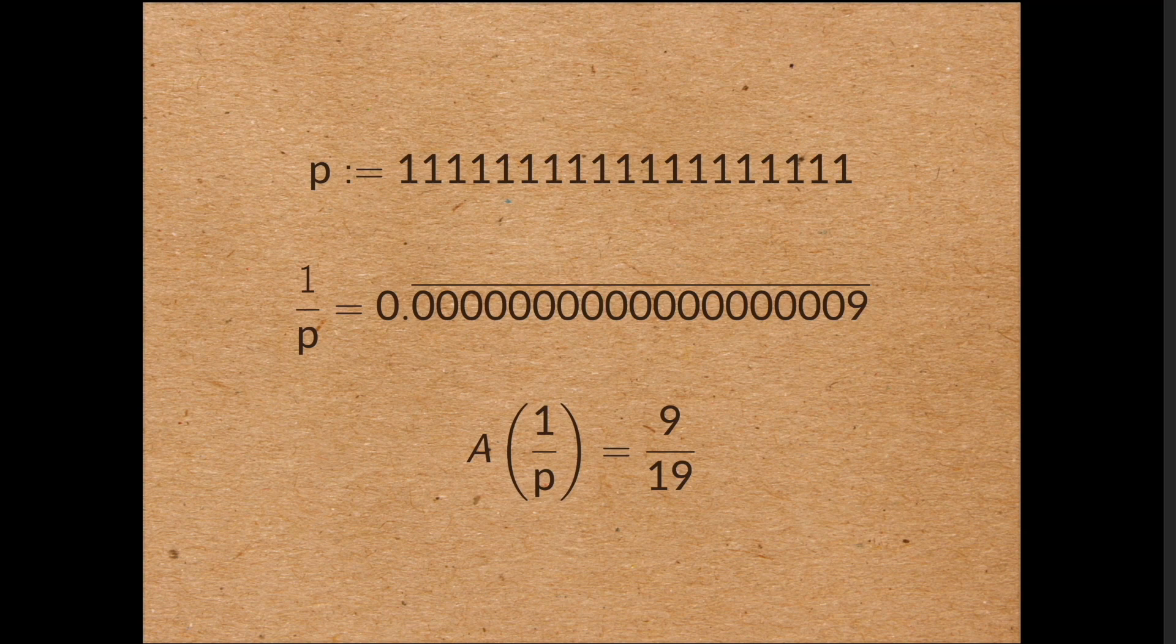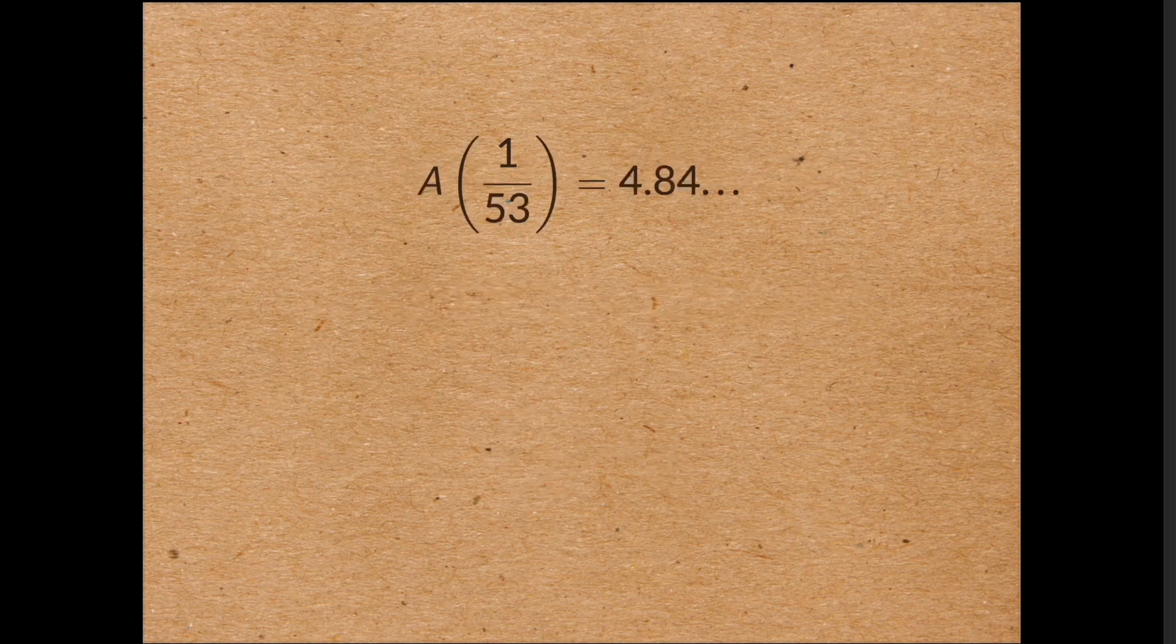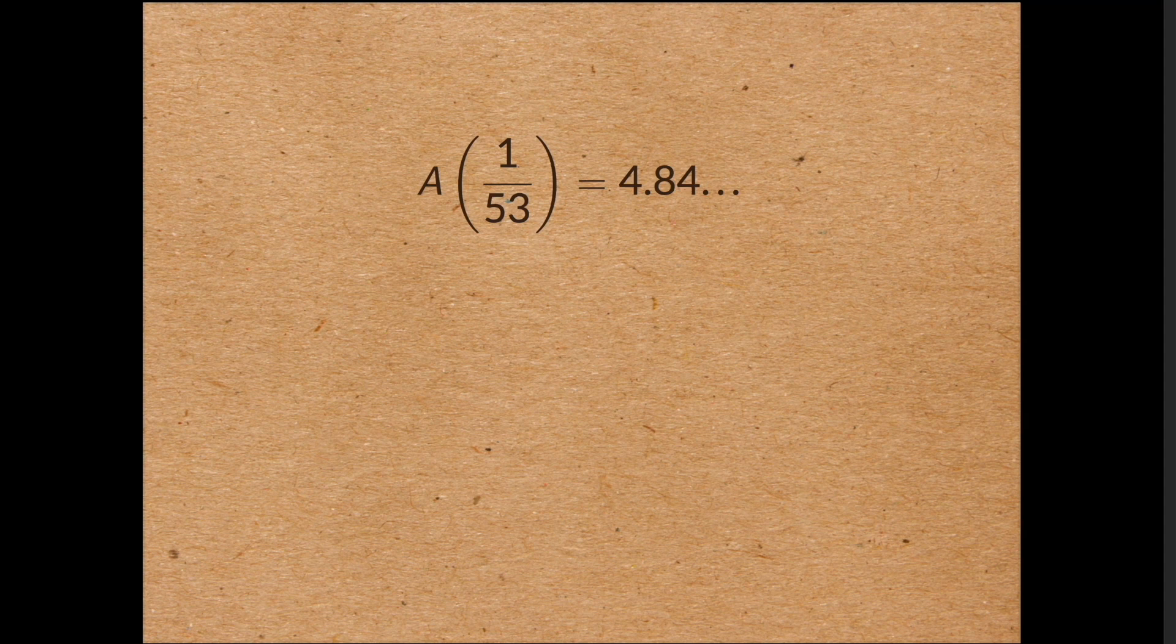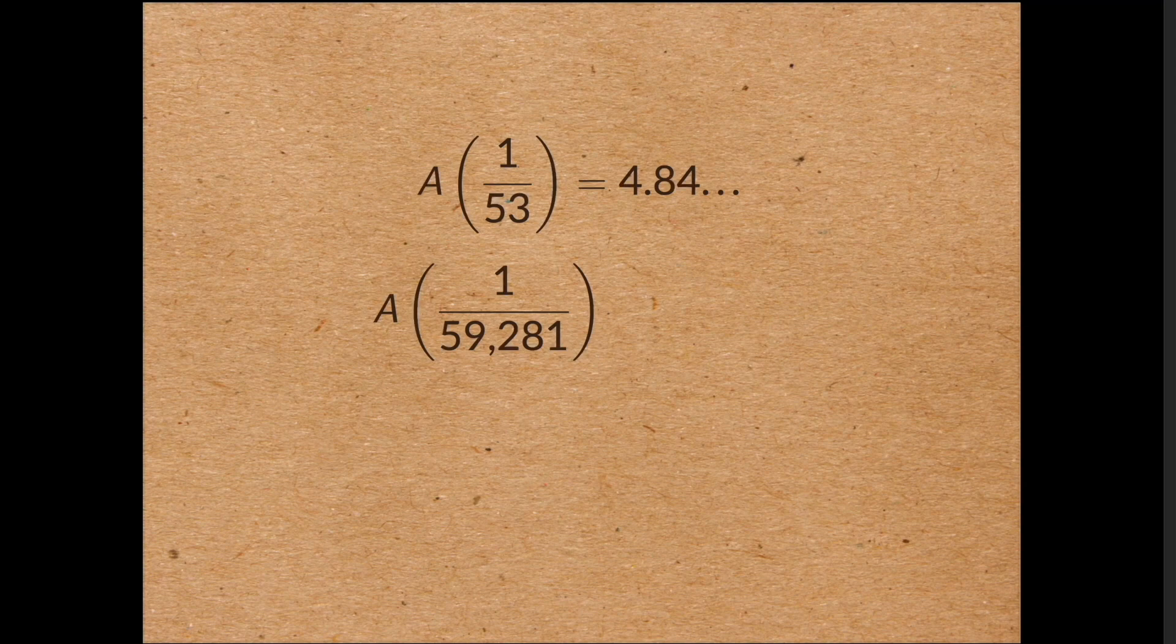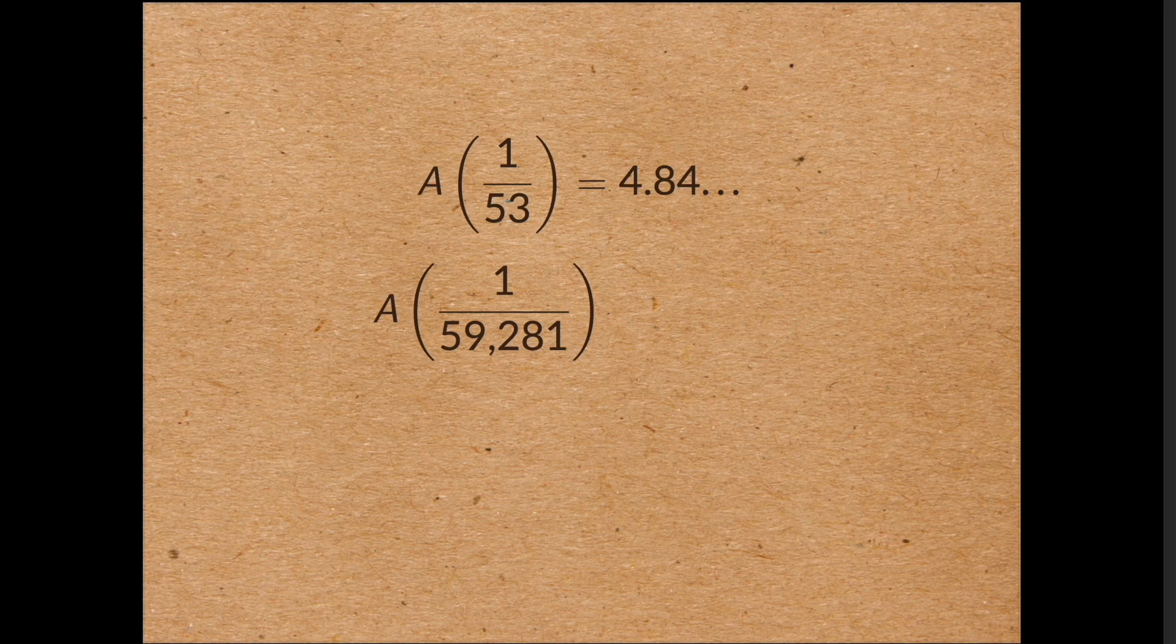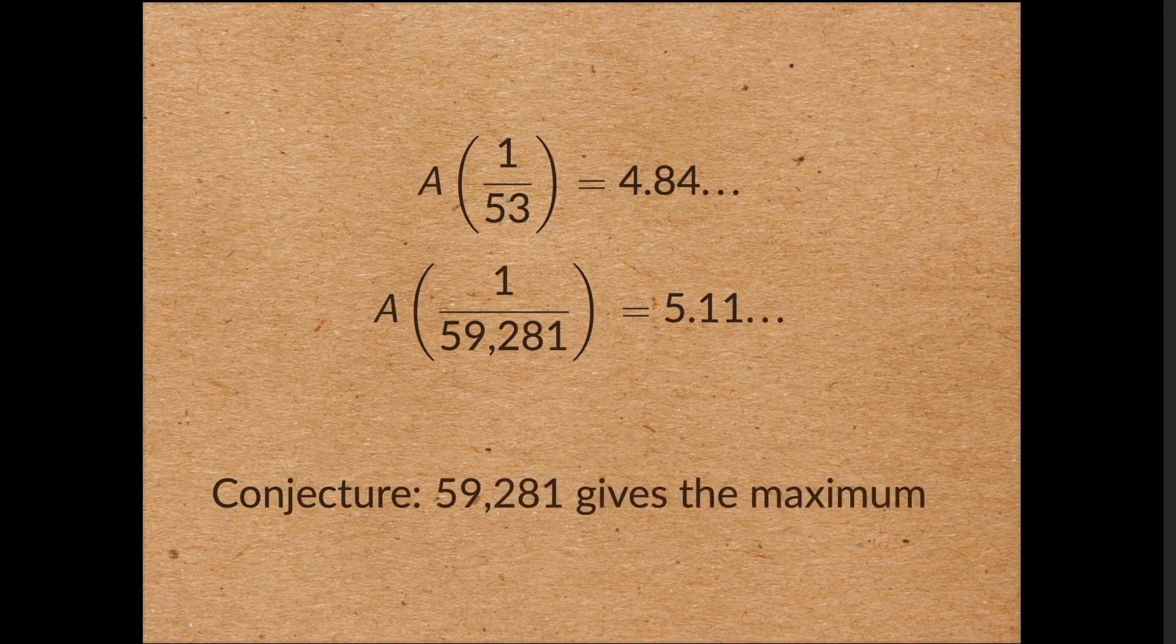So how big can a of 1 on p be? If you take p to be 53, the smallest prime for which the average is bigger than 4.5, you get that a of 1 on 53 is just over 4.8. But here we come to the prime 59,281. If you take the average digit of 1 divided by 59,281, which has a period of length 95 by the way, is 5.11 or so. In particular, it's bigger than 5. And now we have the following guess. 59,281 is the prime number p which maximizes the average digit of 1 on p.